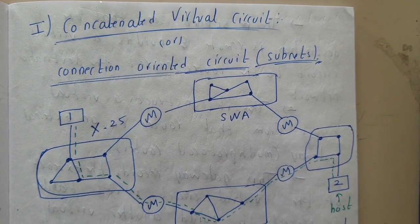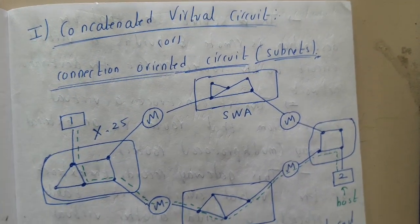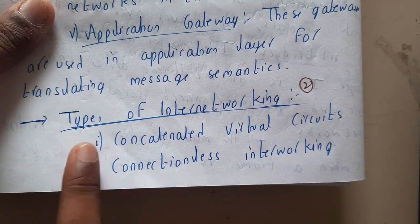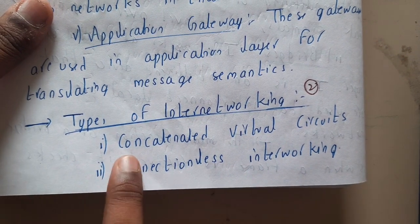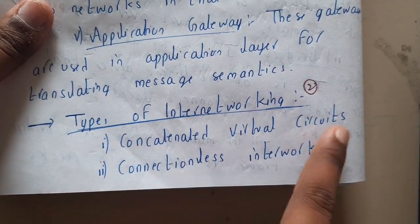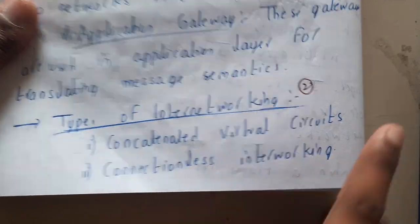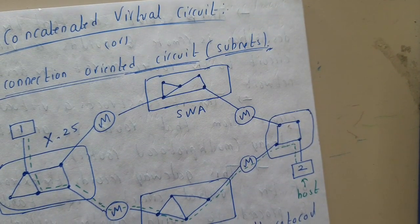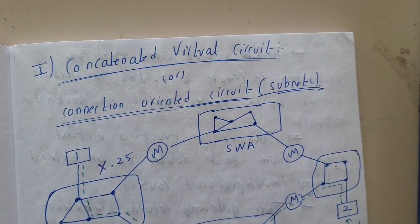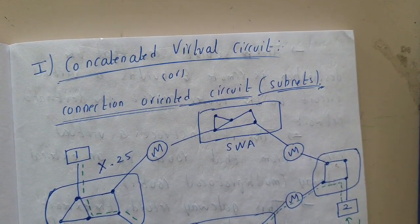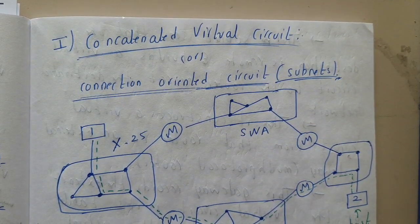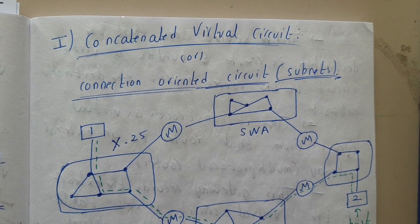Hello guys, we are back with our next lecture. In this lecture, let us go through the types of internetworking. Internetworking is possible in two different ways: connection-oriented, also called connected virtual circuits, and connectionless internetworking. We will first go through the diagram, then the explanation, and then the theory.